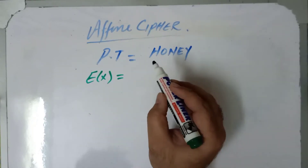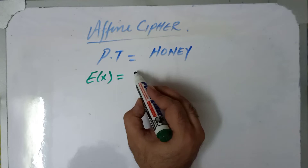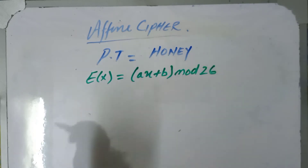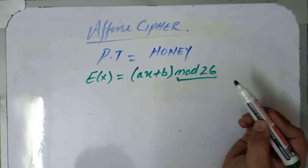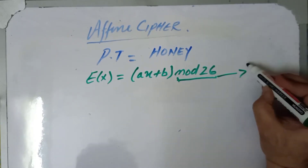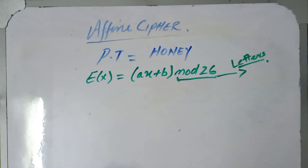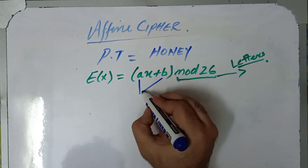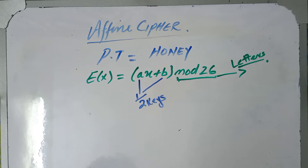Let me revisit the encryption formula which we use for an affine cipher: this is ax plus b, modulus 26. We are taking modulus 26 because we are dealing with 26 letters in the English language, and a and b are the two keys which we use in an affine cipher.